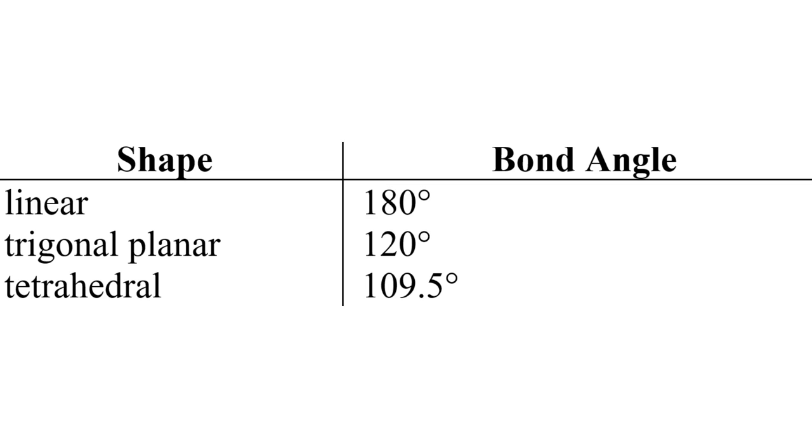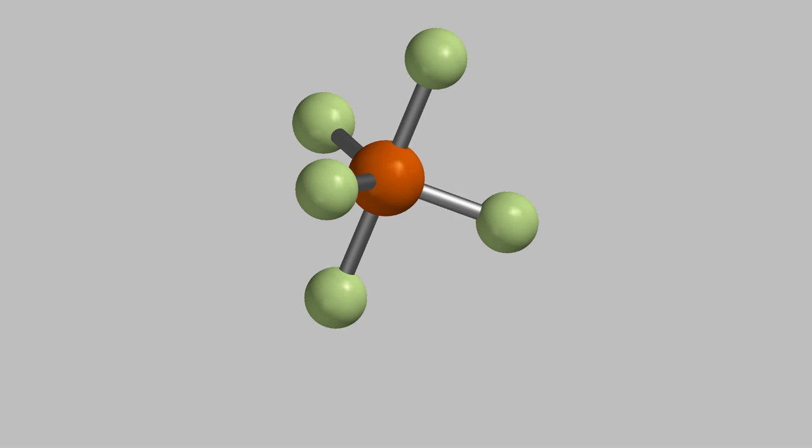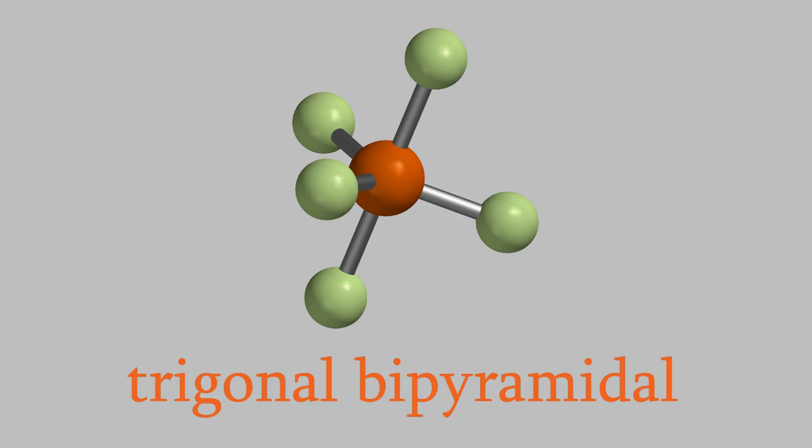When we have five bonds, we get a molecule like phosphorus pentafluoride, which looks like this. This shape is called trigonal bipyramidal. If you look closely at the shape, you'll notice that two of the bonds are directly opposite each other, and the other three form a triangle around the middle.